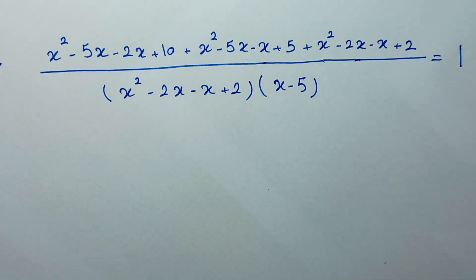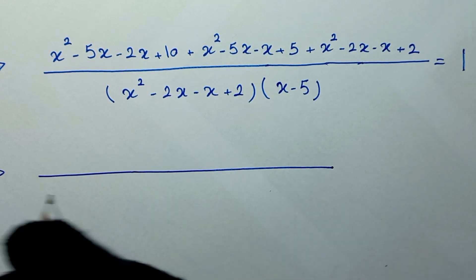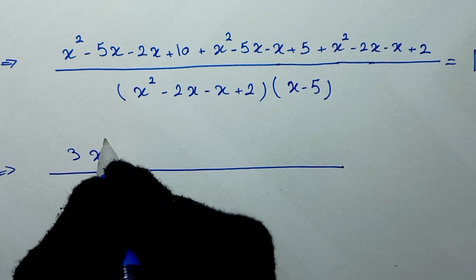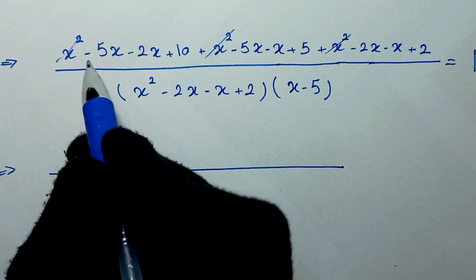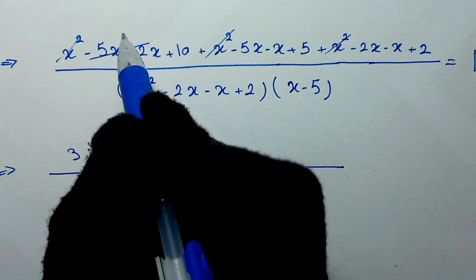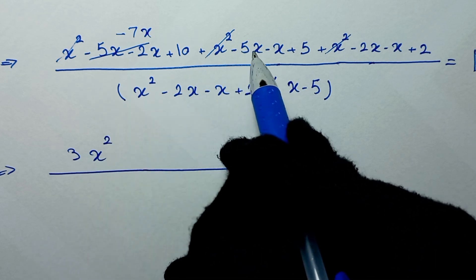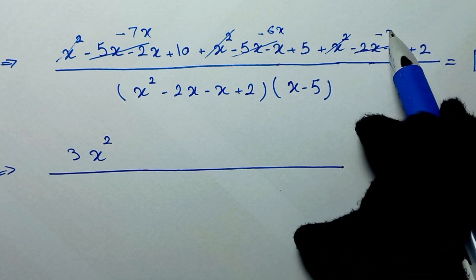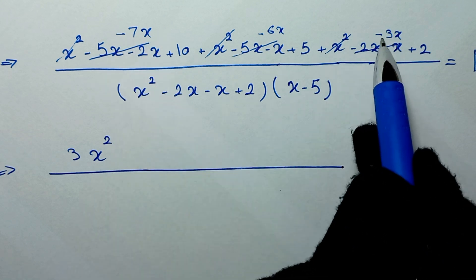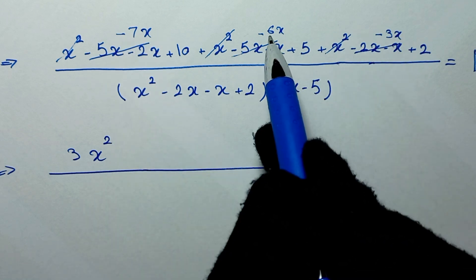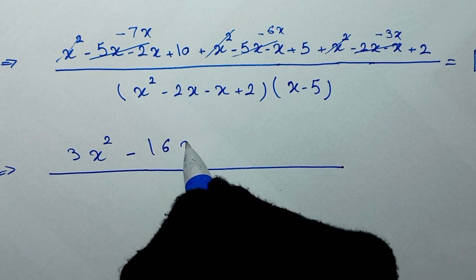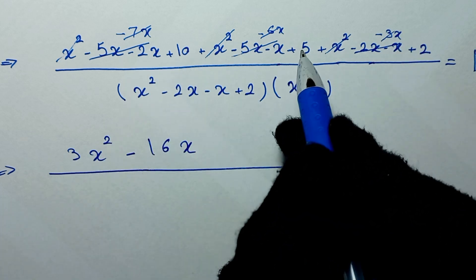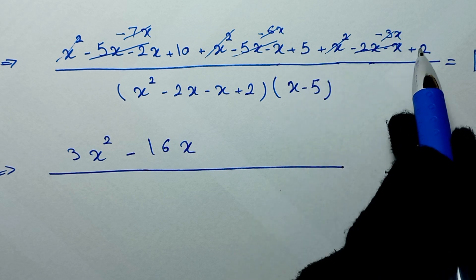Combining like terms in the numerator: x squared plus x squared plus x squared gives 3x squared. For the x terms: negative 5x minus 2x is negative 7x, minus 6x gives negative 13x — wait, negative 7x minus 6x minus 3x is negative 16x. For the constants: 10 plus 5 plus 2 equals 17. So the numerator is 3x squared minus 16x plus 17.